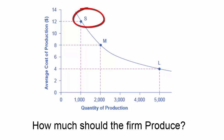A small factory like S produces 1,000 alarm clocks at an average cost of $12 per clock. A medium factory like M produces 2,000 alarm clocks at a cost of $8 per clock. And a large factory like L produces 5,000 alarm clocks at a cost of $4 per clock. Economies of scale exist because the larger scale of production leads to lower average costs.